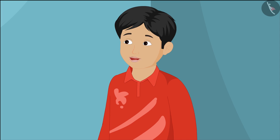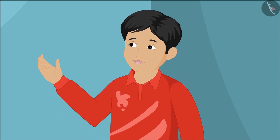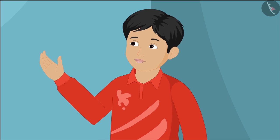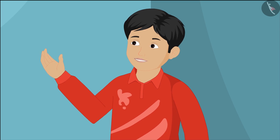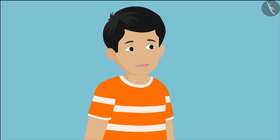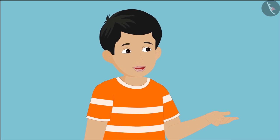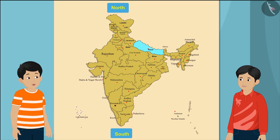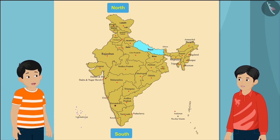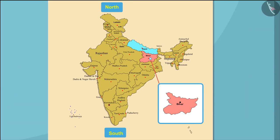Now, can you tell me by looking at the map of India which states are in the east direction? Oh, that's very easy! By seeing the map, one can easily tell that Bihar, Jharkhand, and West Bengal are in the east direction.